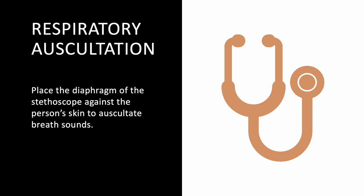For respiratory auscultation, you must place the diaphragm of the stethoscope directly against the patient's skin — not over a shirt. Listening over clothing adds artifact sounds that can mimic crackles. It's like taking a blood pressure over a jacket — you won't get accurate results. Always go skin to diaphragm for accurate breath sounds.